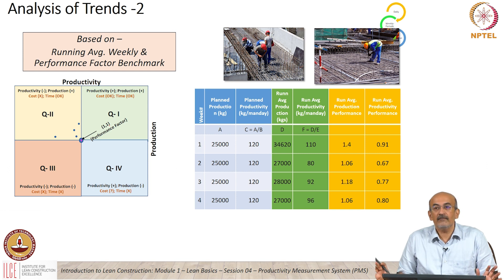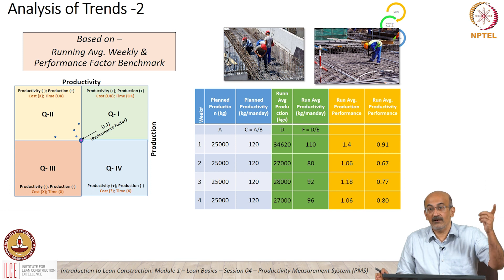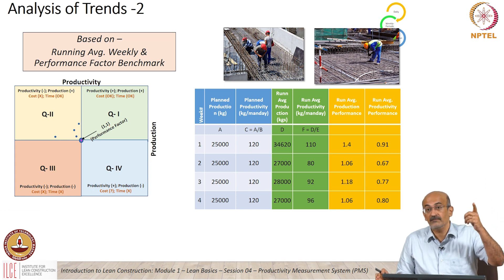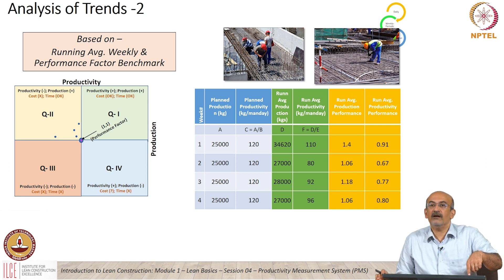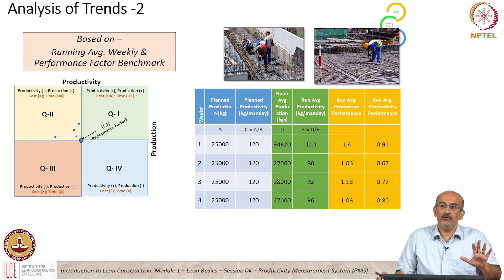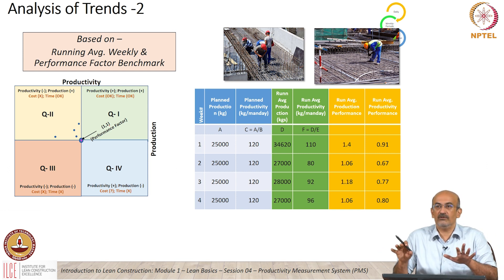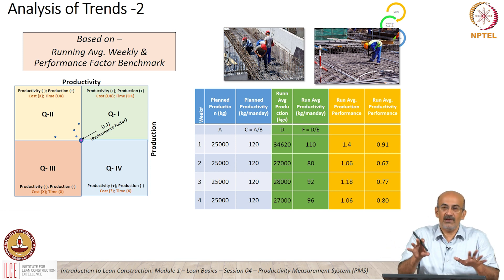When you look at it, all of them are in Q2. This relates to what we saw in the performance factor graphs — production was always above target while productivity was below. This is another way to view the same information. There is a lot of choice of what you might call dashboards, and it is up to the team to decide which dashboard they want to standardize on and be comfortable with.